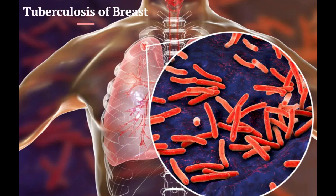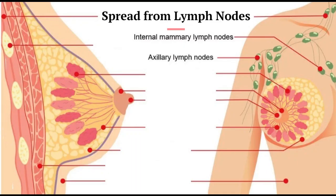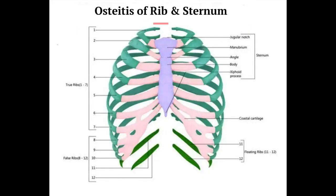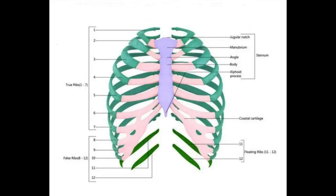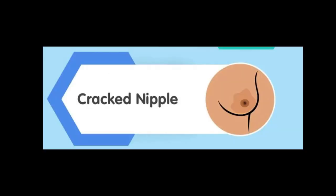Tuberculosis of the breast is uncommon. It is caused by spread from the axillary or internal mammary lymph nodes, or osteitis of the rib or sternum. Sometimes infection may reach the breast from the pleural cavity. Uncommon sources of infection include entry from a cracked nipple or a hematogenous route.